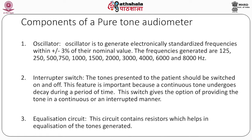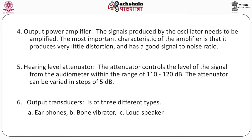Next is the interrupter switch. The tones presented to the patient should be switched on and off. This feature is important because a continuous tone undergoes decay during a period of time. This switch gives the option of providing the tone in a continuous or interrupted manner. Next is the equalization circuit, which contains resistors that help in equalizing the tone generated. This is because the threshold of human hearing is not uniform, and the human ear is most sensitive at around 2 kilohertz.